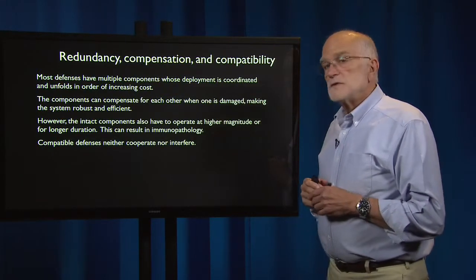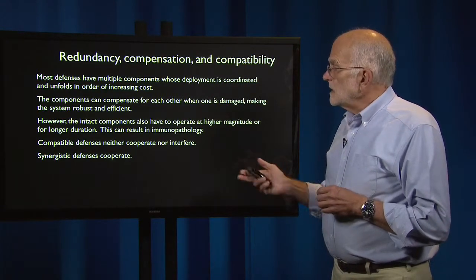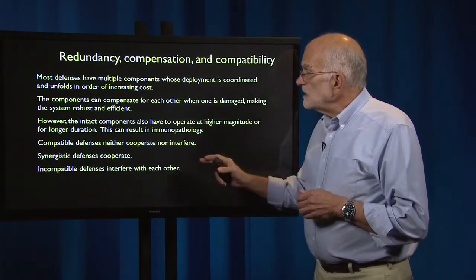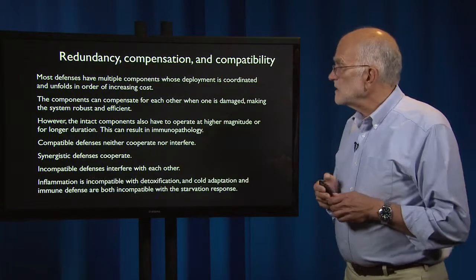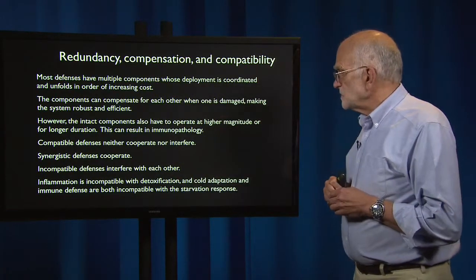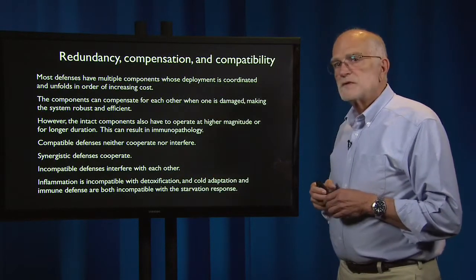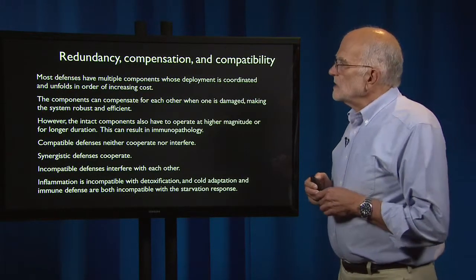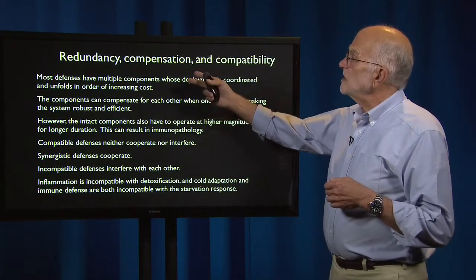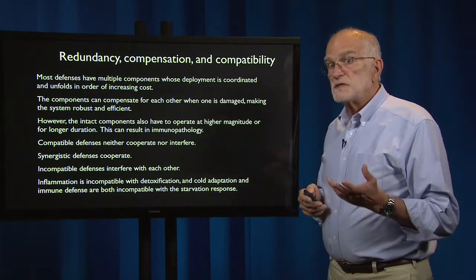Compatible defenses are ones that neither cooperate nor interfere. Synergistic defenses are defenses that cooperate, and incompatible defenses interfere with each other. For example, inflammation is incompatible with detoxification, and cold adaptation and an immune defense are both incompatible with the starvation response. In thinking about defenses, it's wise to keep in mind these issues of redundancy, compensation, and compatibility, because they are all involved in the diseases of defense.